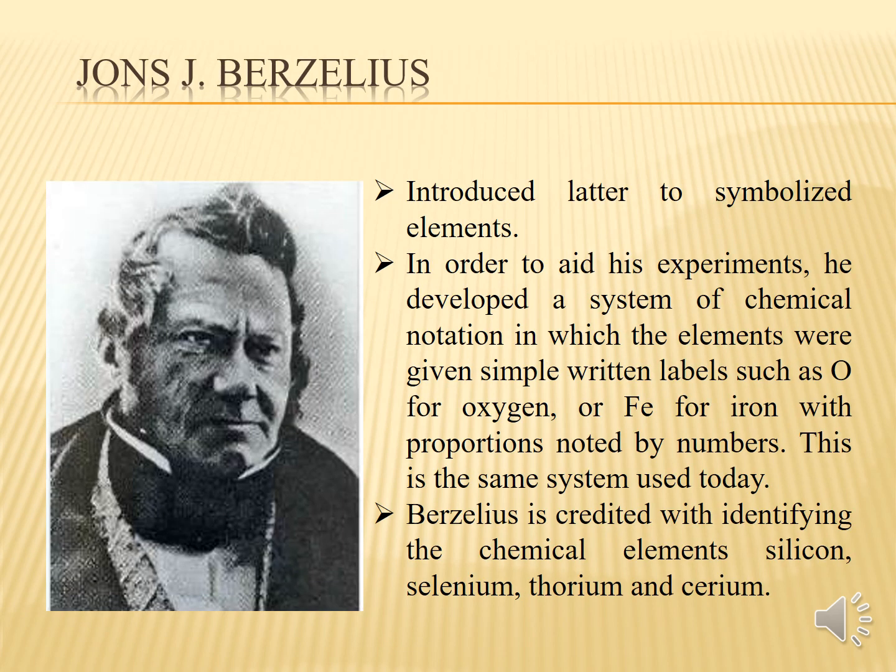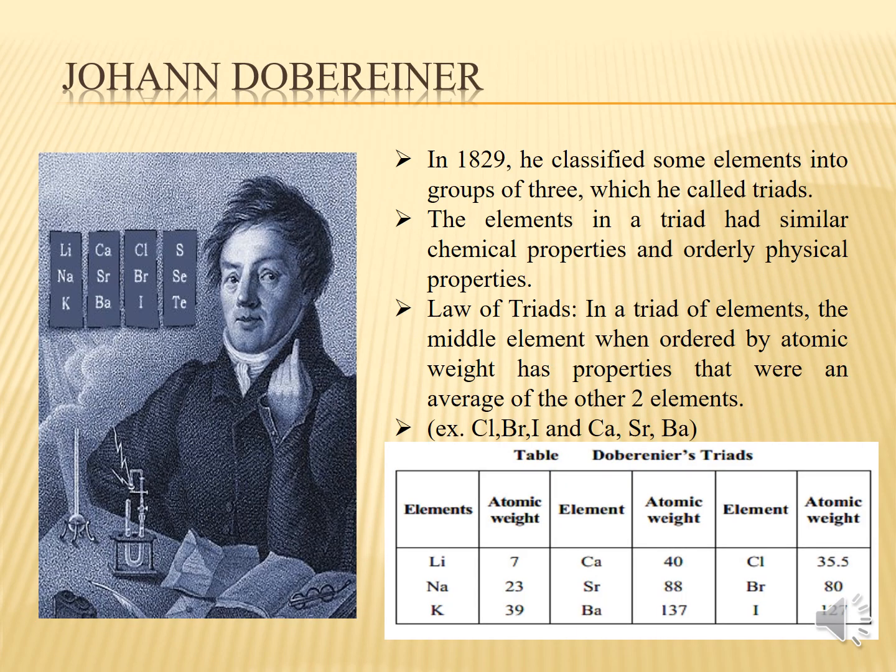Another contribution is that of John Jacob Berzelius. Berzelius was a Swedish chemist who is considered one of the founders of modern chemistry. He made several important contributions to the field of chemistry, including the development of the modern system of chemical symbols and the determination of atomic weights. He also discovered several chemical elements such as silicon, selenium, thorium, and cerium. His work laid the foundation for the development of the periodic table of elements.